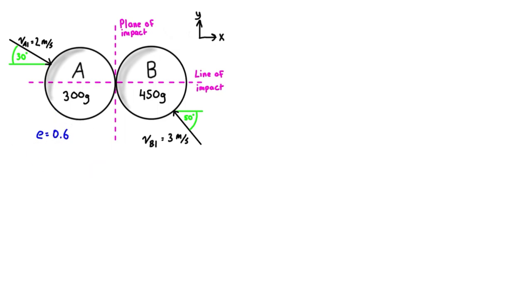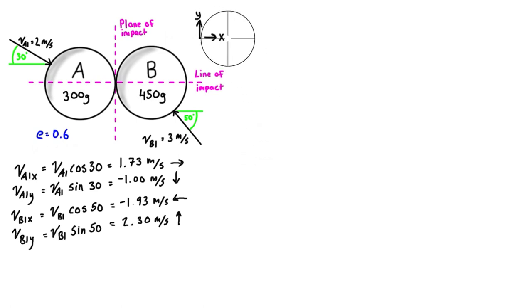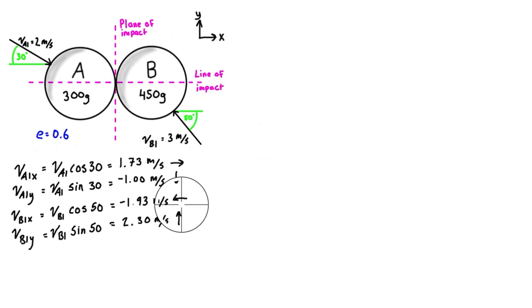The first thing we want to do is write va1 and vb1 in their component forms, which we can do easily with sine and cosine functions. Positive magnitude means it's going in the direction of the positive axis, and if it's negative, it's going opposite to the positive direction.